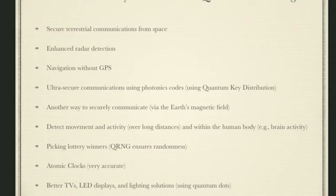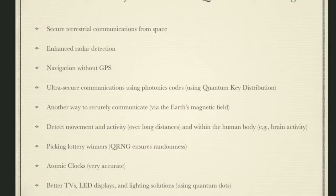Enhanced radar detection — we can make our radars more sensitive and harder to detect using quantum technologies. We can navigate without GPS in a fully passive mode using the Earth's magnetic field. We can also detect other moving vehicles or objects because they disrupt the magnetic field. We can have ultra-secure communications, with other ways to securely communicate via the Earth's magnetic field. We can detect movement and activity over long distances — useful within a mission or national security context — and also detect movement and activity within the human body, such as brain activity, in a much more accurate way.